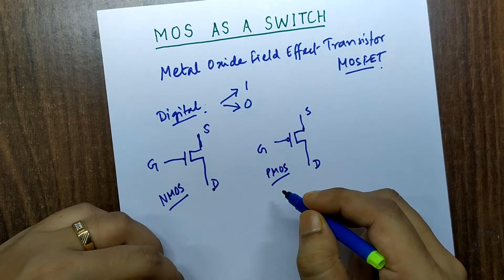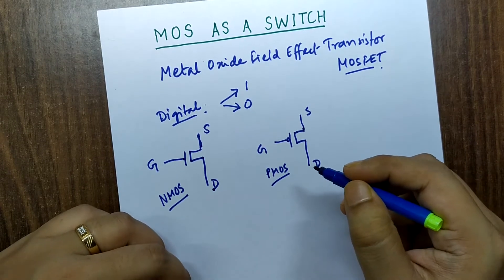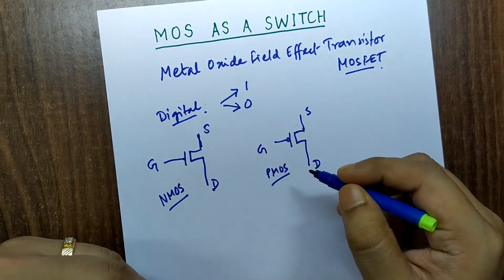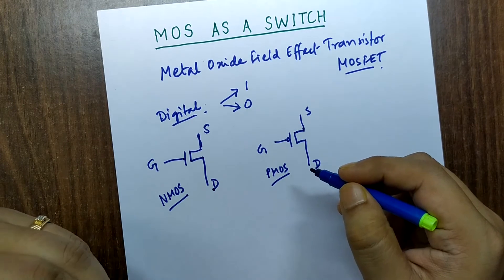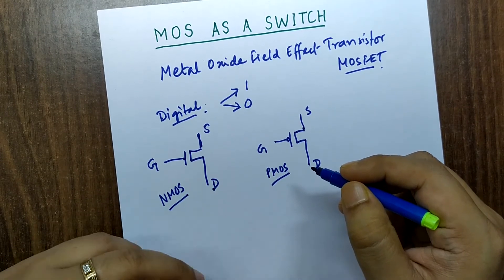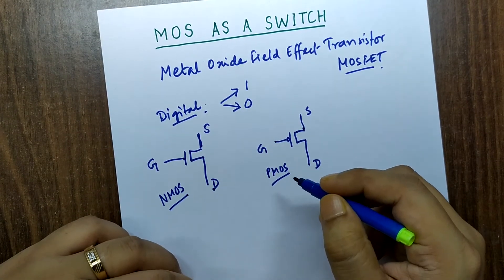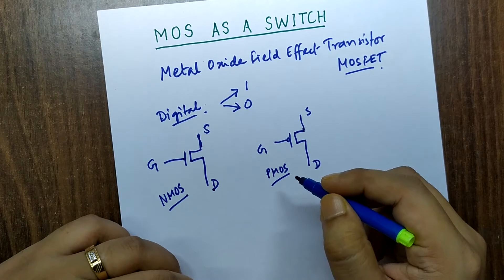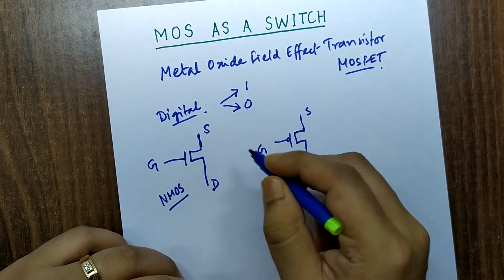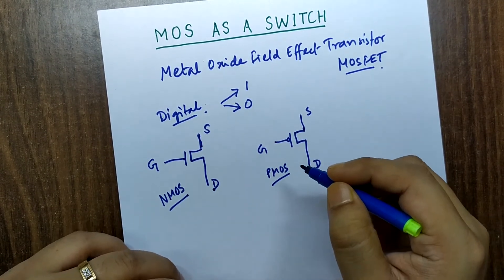So now we understand the difference between NMOS and PMOS, which I have covered in detail in my earlier videos on the basic understanding and basic principles of MOSFET. Today we will focus on how we make a digital switch using MOSFET.